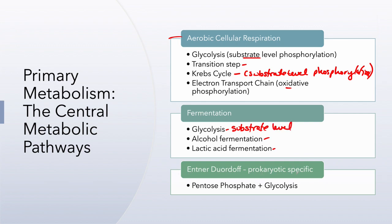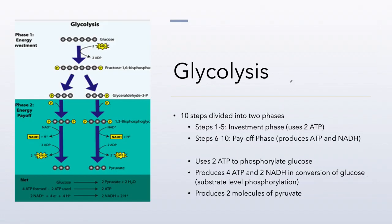In prokaryotes only, we have the Entner-Doudoroff pathway and the pentose phosphate pathway. Both of these occur alongside glycolysis and replace part of the glycolytic pathway. Both will create some ATP through substrate level phosphorylation. Glycolysis is a 10-step metabolic pathway that is branched. In steps one through five, called the investment phase, the cell must input two ATP to prepare the glucose molecule for further oxidation.